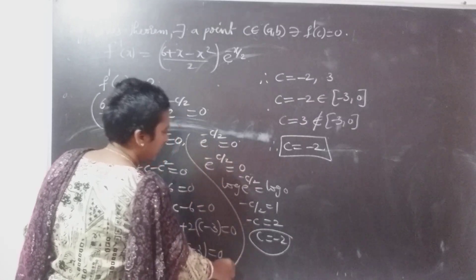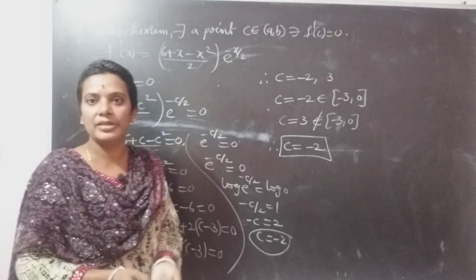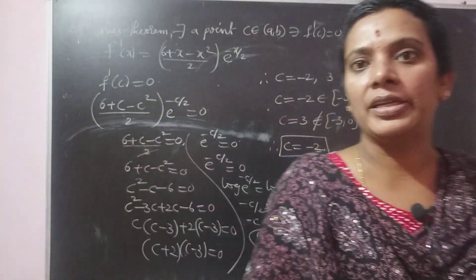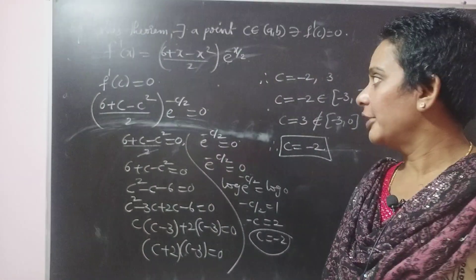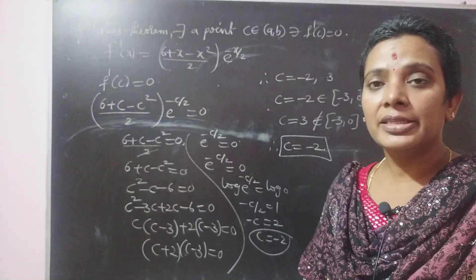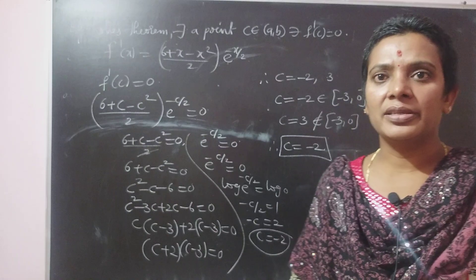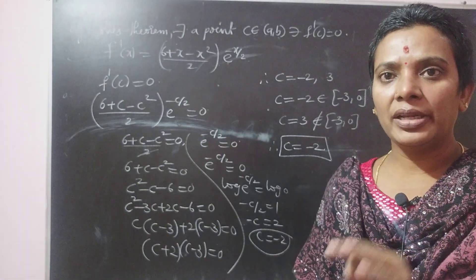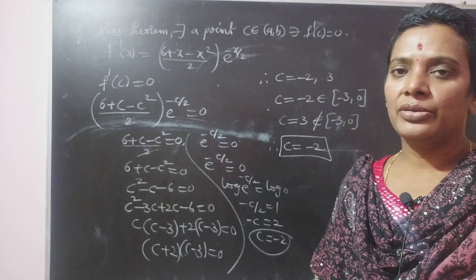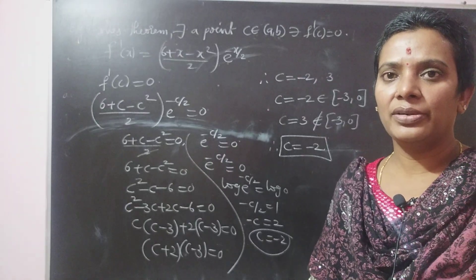From either approach we get C equal to -2. C equal to -2 is in the interval (-3, 0). It is the procedure of Rolle's theorem — we can find at least one point in the open interval (A, B). This is the verification of Rolle's theorem: we found the point C equal to -2 in the interval (-3, 0).